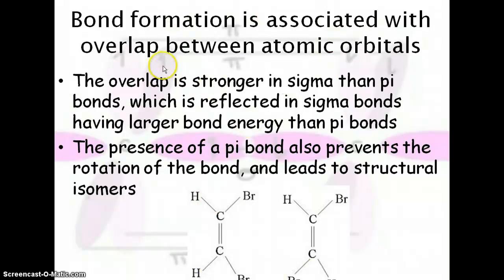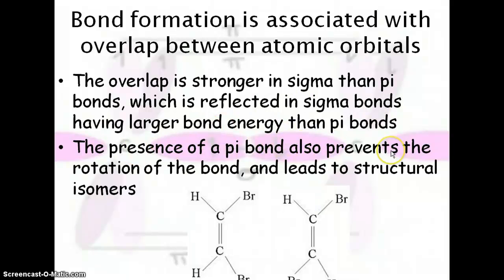Bond formation is associated with the overlap between atomic orbitals. Overlap is stronger in sigma than in pi bonds, so sigma bonds have a larger bond energy than pi bonds. The presence of a pi bond also prevents the rotation of a bond. Because pi bonds are above and below, they actually restrict movement and result in structural isomers.